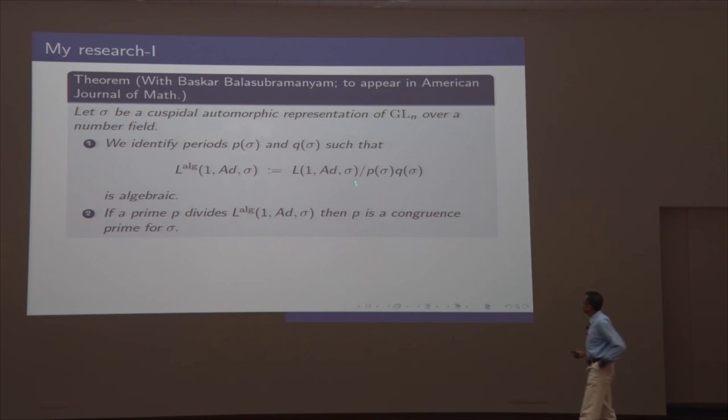And more generally, we then looked at, well, zeta 2 by pi squared is rational. What rational number is that? And we identified, we looked at primes which divide this rational number. I'll be done in another minute, I assure you. And we proved that if a prime divides this algebraic number, this is a congruence prime, meaning there's some other elementary particle of the same kind. These two are unequal, but somehow modulo primes are equal. That's Baskar.